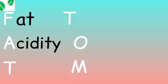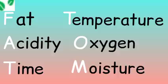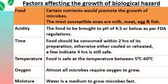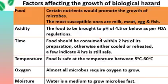Here are the factors affecting the growth of biological hazards. The abbreviation to recall these factors is FAT-TOM, where F stands for food, A represents acidity, T refers to time, T stands for temperature, O stands for oxygen, and M means moisture.